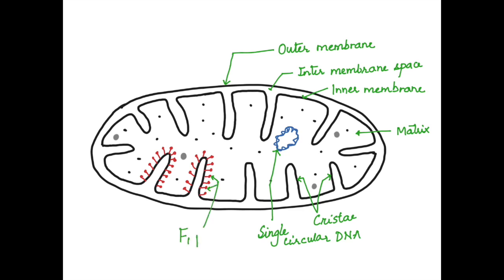These particles are called F1 particles, or they are also called oxysomes. They help in ATP production. The matrix of the mitochondria consists of granules, which are storage granules, and ribosomes responsible for protein synthesis.